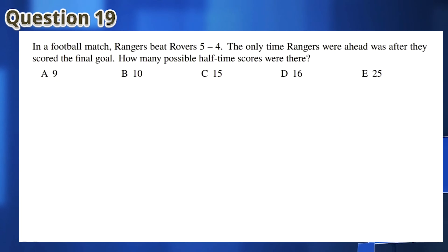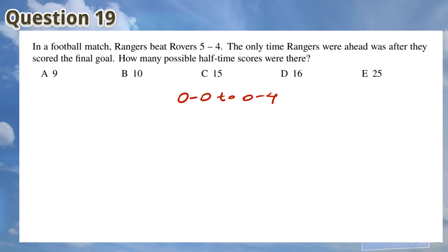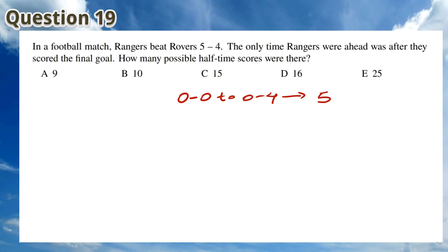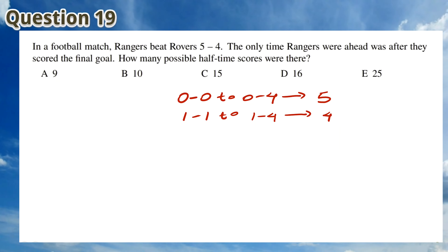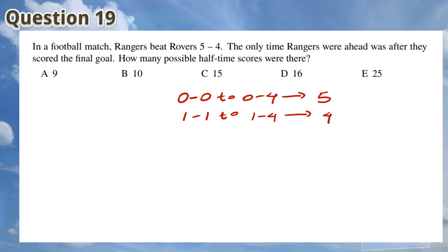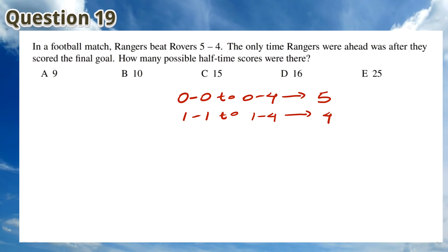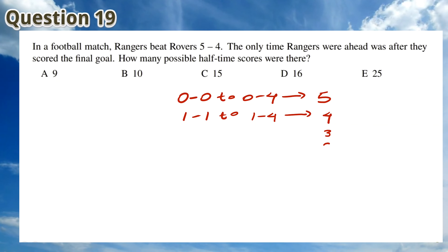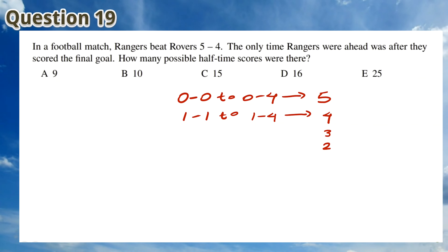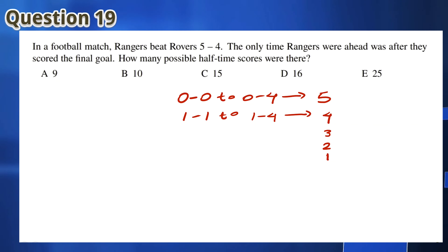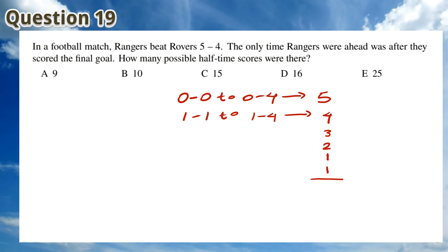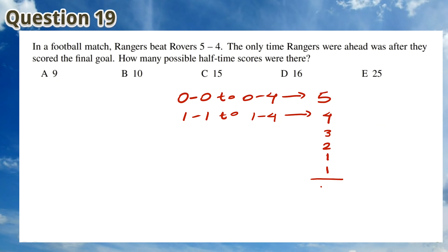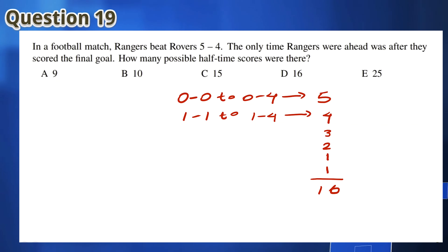For Question 19, if the Rangers did not score in the first half, there would be a total of 5 possible halftime scores from 0-0 to 0-4. If the Rangers scored one goal, there would be 4 possible halftime scores from 1-0 to 1-4. Similarly, there are 3 possible halftime scores if Rangers scored 2 goals, 2 if they scored 3 goals, and 1 if they scored 4 goals. It is also possible that all goals were scored in the first half, and the halftime score was 5-4, so the total possible number of halftime scores is 16.